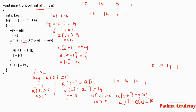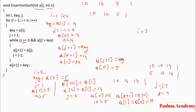Then j is decremented again: j = 0 minus 1 = -1. Is -1 greater than or equal to 0? No. The while loop condition is false and it does not execute. Then a[j+1] = key is executed: a[-1+1] = a[0] = key = 5. So a[0] becomes 5 and the array is now 5, 10, 14, and 1. Try it yourself for when i equals 3.